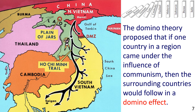In the picture, we see a map of Vietnam and other countries in Southeast Asia. Sentence Example: The domino theory proposed that if one country in a region came under the influence of communism, then the surrounding countries would follow, in a domino effect.